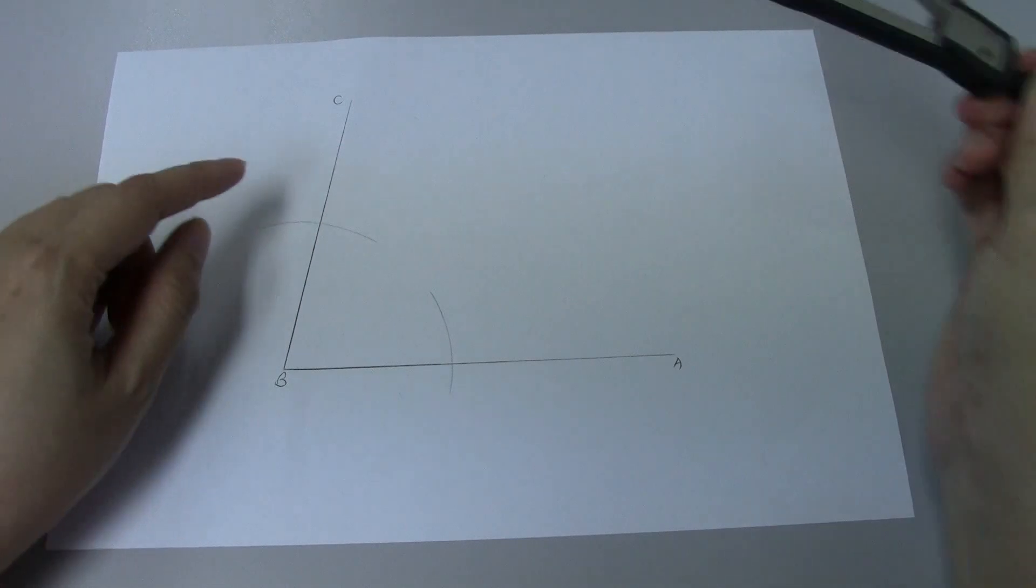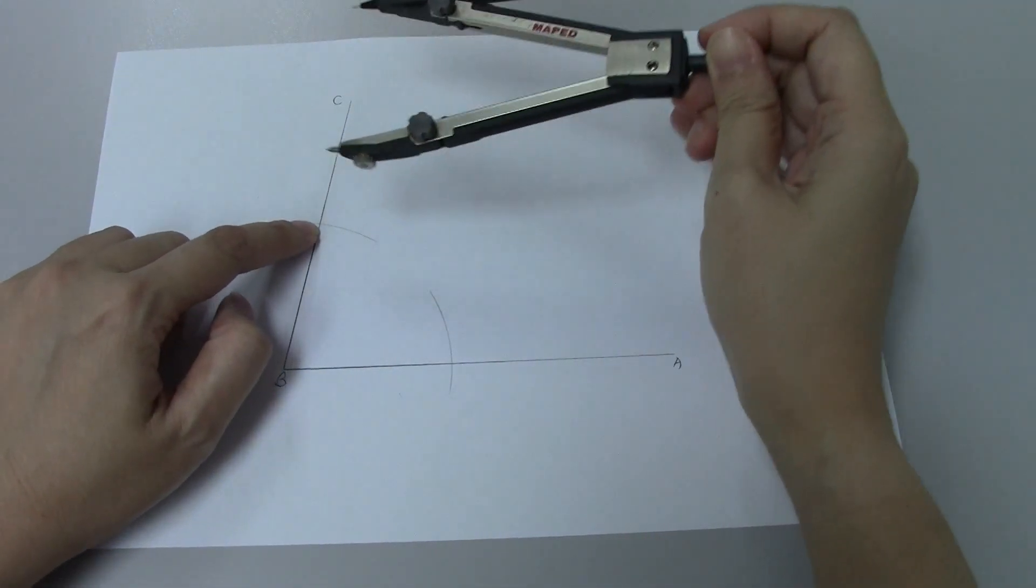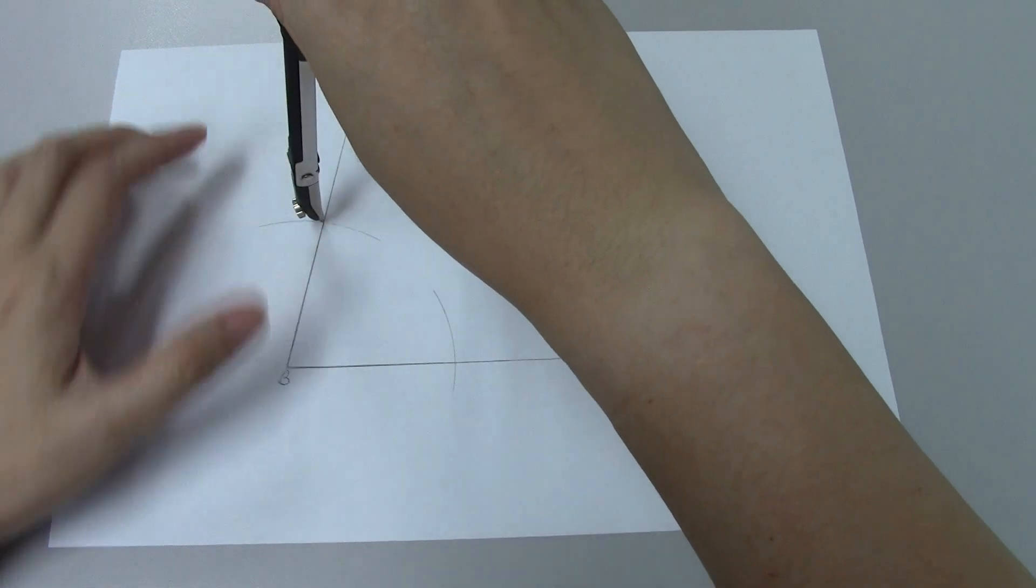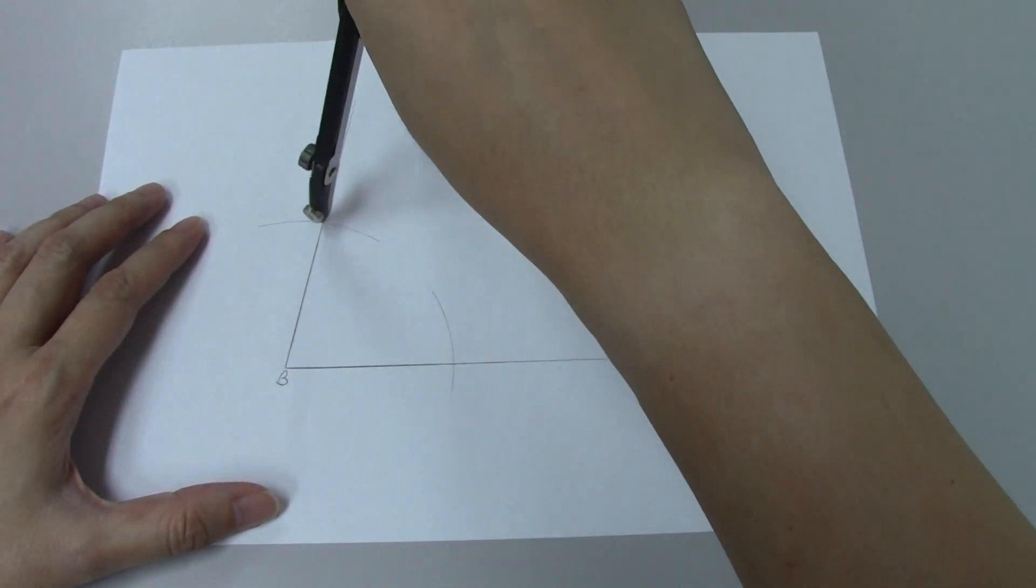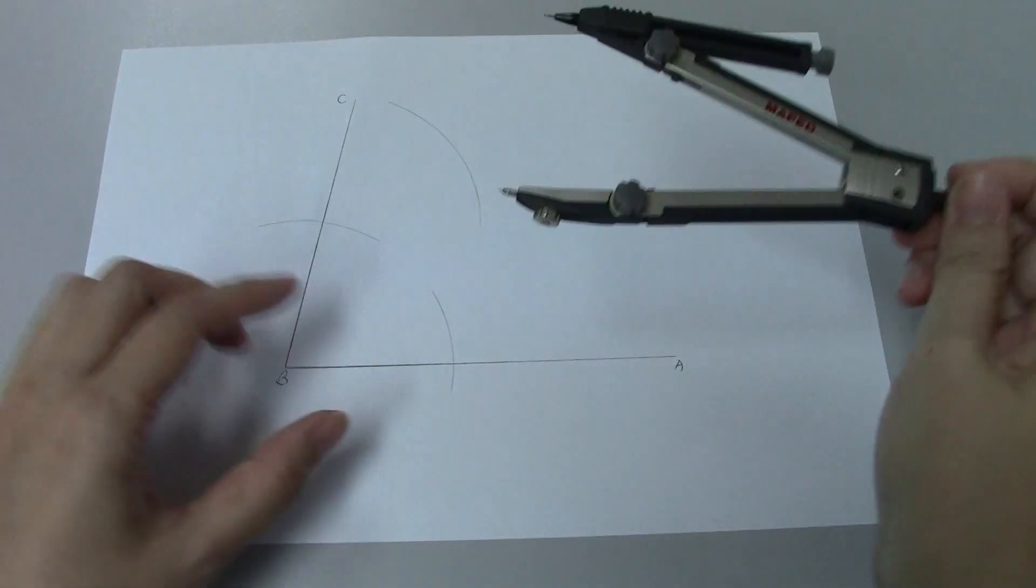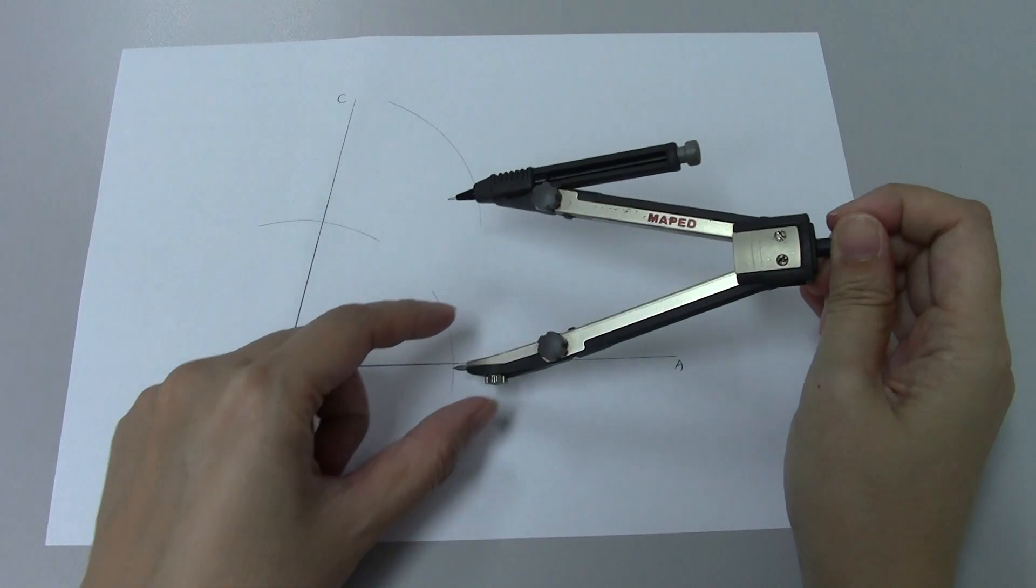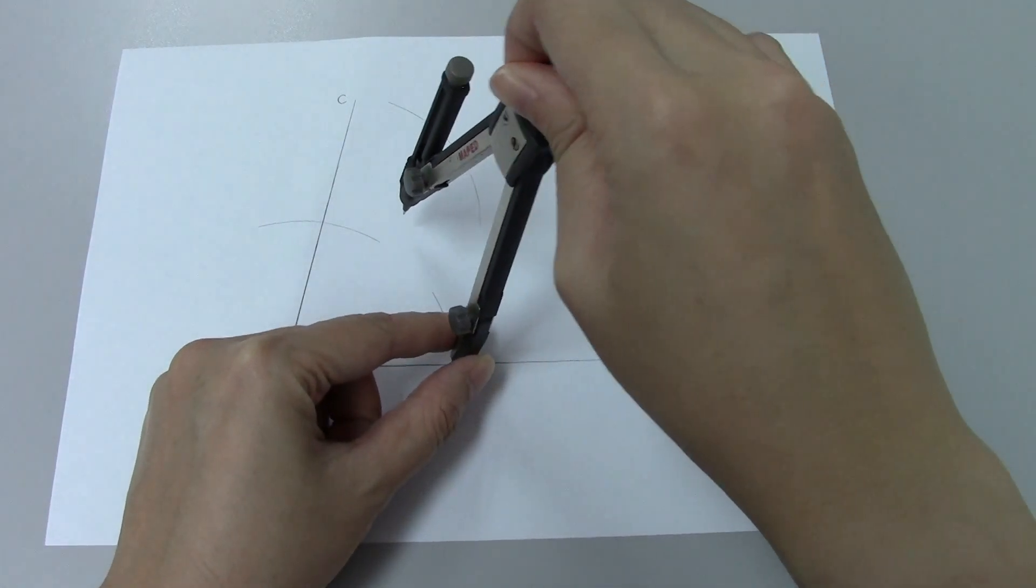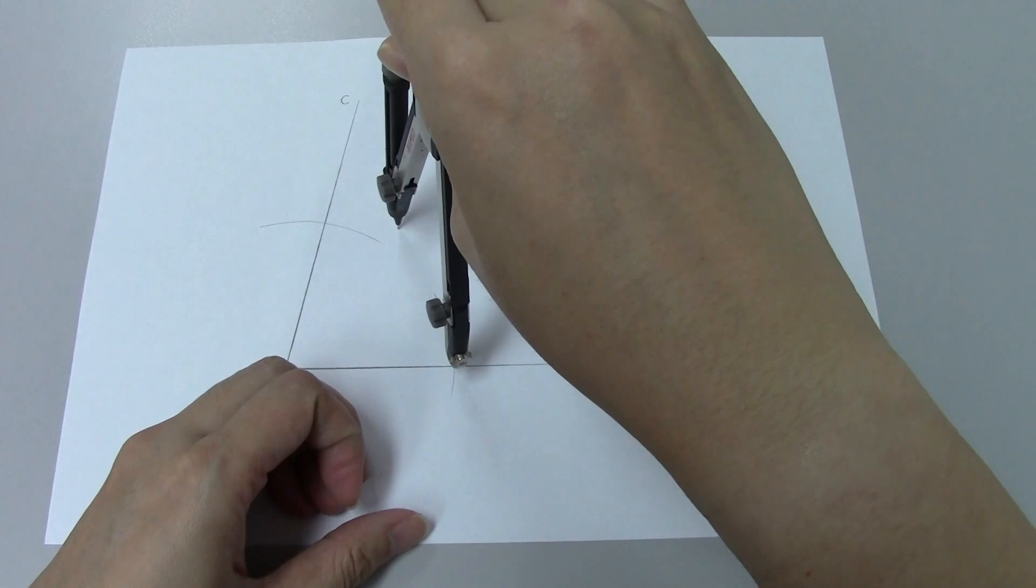Step two, now place the needle point on this first intersection. Draw another arc. Repeat the same step but now on this other intersection point. Draw an arc.